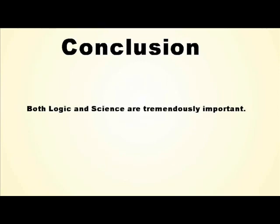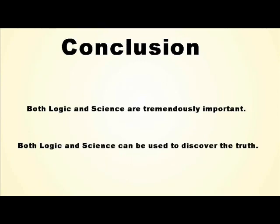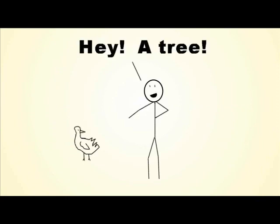So to sum it up, logic is just as important as science if you want to get at the truth. Without that, there's nothing to stop people from assuming that a tree is a bird just because they show up in the same place a lot. You can use measurement to show that birds can fly and trees can't, but you can't use it to prevent people from drawing false conclusions.